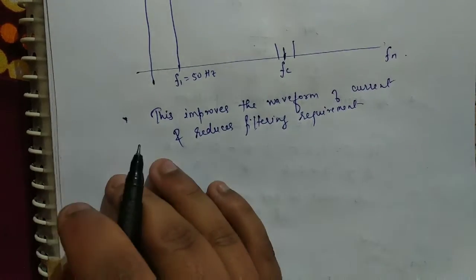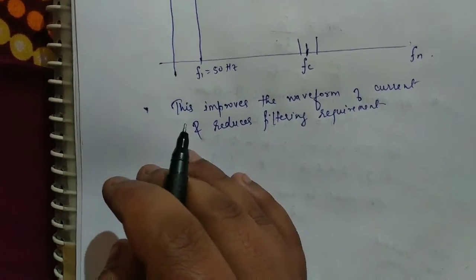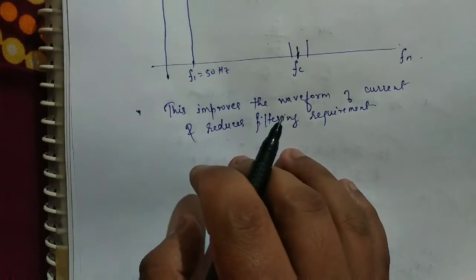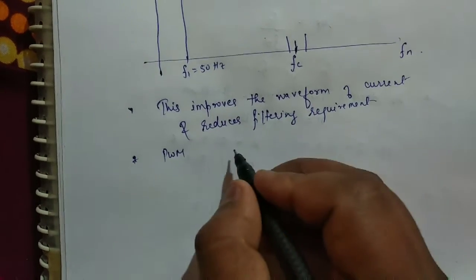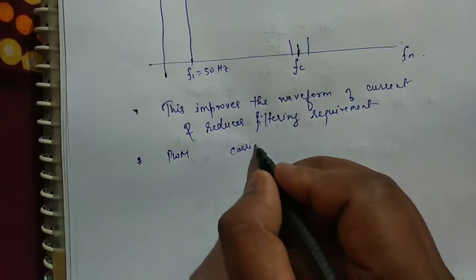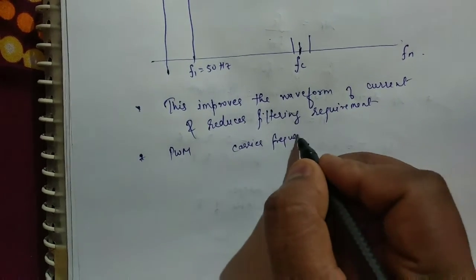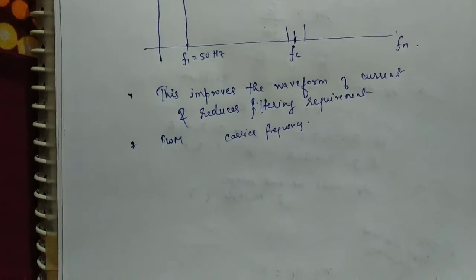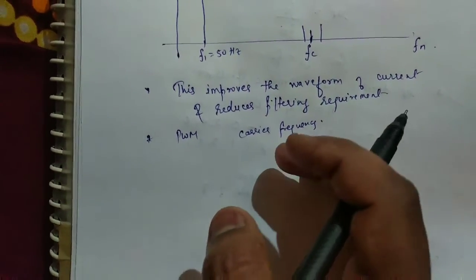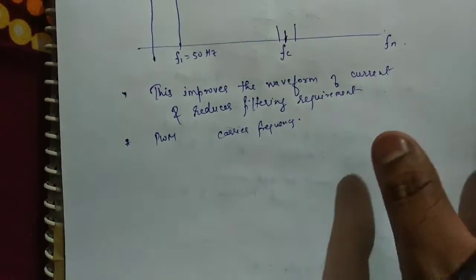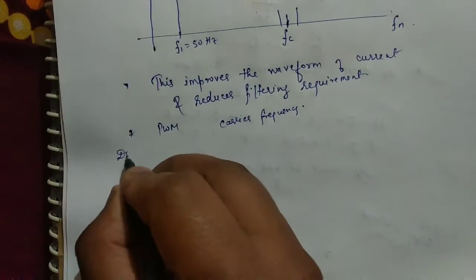So in PWM inverter, the device is switched at which frequency? The device is switched at carrier frequency. In PWM, the device is switched at carrier frequency, but as the carrier frequency increases, the switching losses also increase.